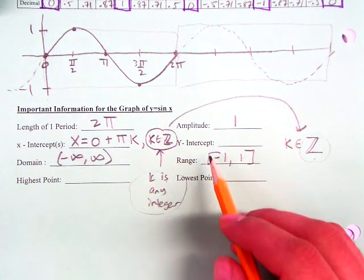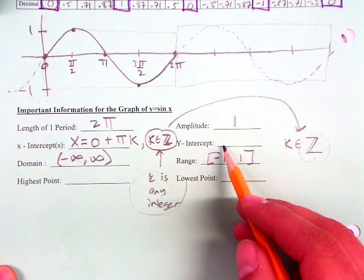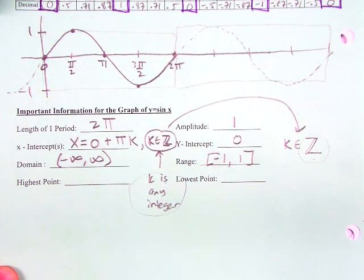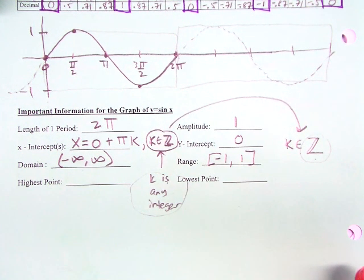Y-intercept. There's only one. What is it? Zero. Everybody with me here so far?